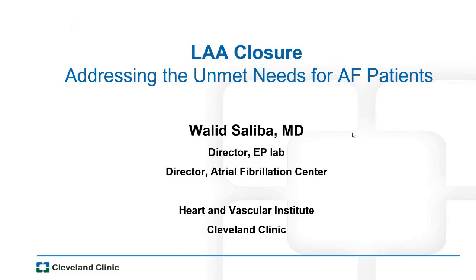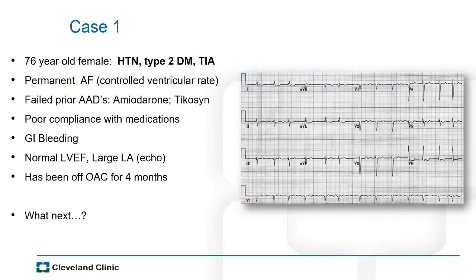I will start with a typical case from our clinic. This is a 76-year-old female patient, hypertensive and diabetic, with a prior history of TIA — obviously a higher-risk patient. She has permanent atrial fibrillation with controlled ventricular rate and has failed prior antiarrhythmic medication. She has had poor compliance with medications. On warfarin, her INR would go up to four, with GI bleeding sometimes requiring transfusion. She has a normal EF, a large left atrium, and has been off oral anticoagulation for the past four months because of her history of bleeding. The question is: what do we do next?